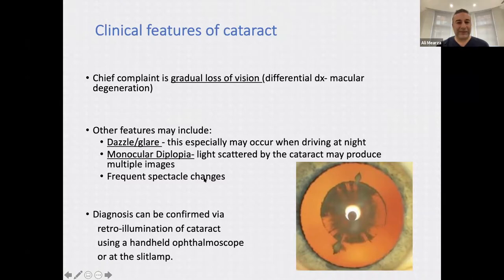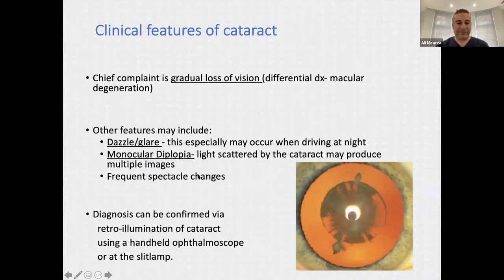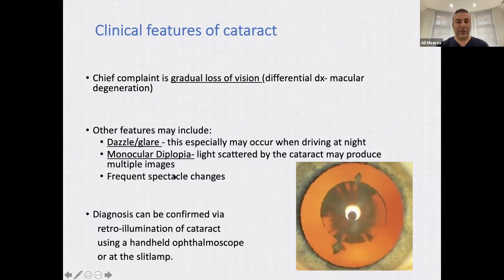Other features patients may complain of include dazzle, glare, and monocular diplopia — double vision when one eye is covered, caused by light scattered by the cataract producing multiple images. Cataracts can also induce changes in prescription, causing increasing myopia and requiring frequent spectacle changes, which is another indicator that cataracts may be developing.